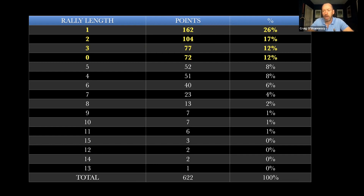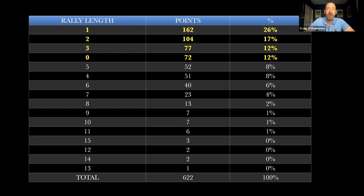When we look at the data, the ones highlighted in yellow are specifically there because those rally lengths all made double digits: 12%, 12%, 17%, 26%. My general rule when looking at analytics is: if something reaches double digits, I'm going to give it a lot of attention. If something's in single digits, we'll look at it later. This is the reality of how club players play their matches — and the reality of their practice court is the exact opposite. At the bottom of the data, long rallies of 12, 13, 14, 15 shots? Who cares?